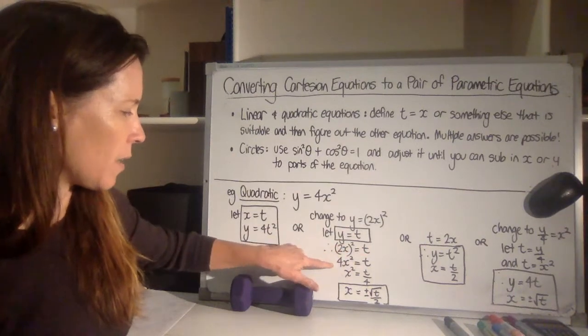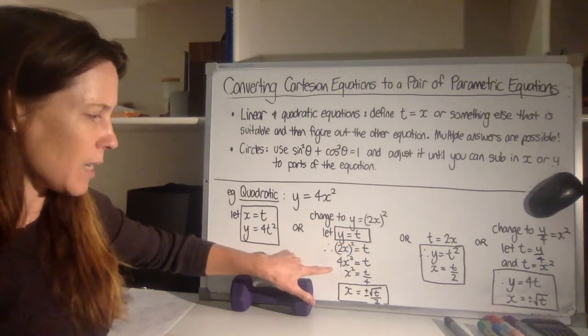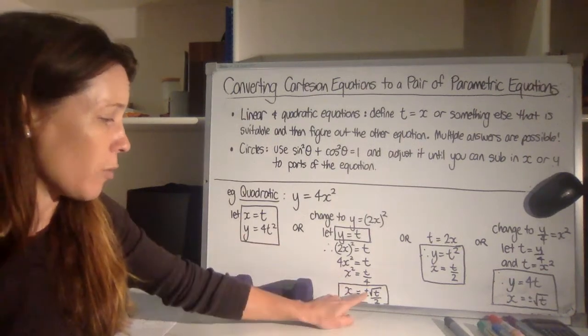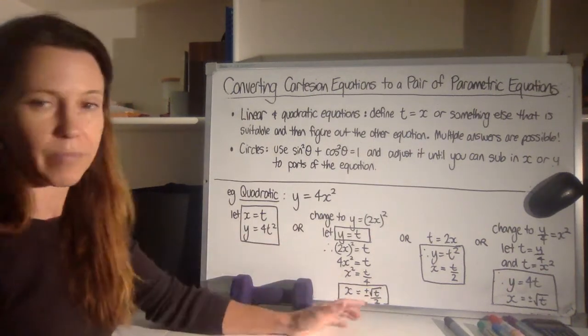I've got to say 4x squared is equal to t. So x squared is t over 4. So then x is the positive or the negative square root of t over 2.